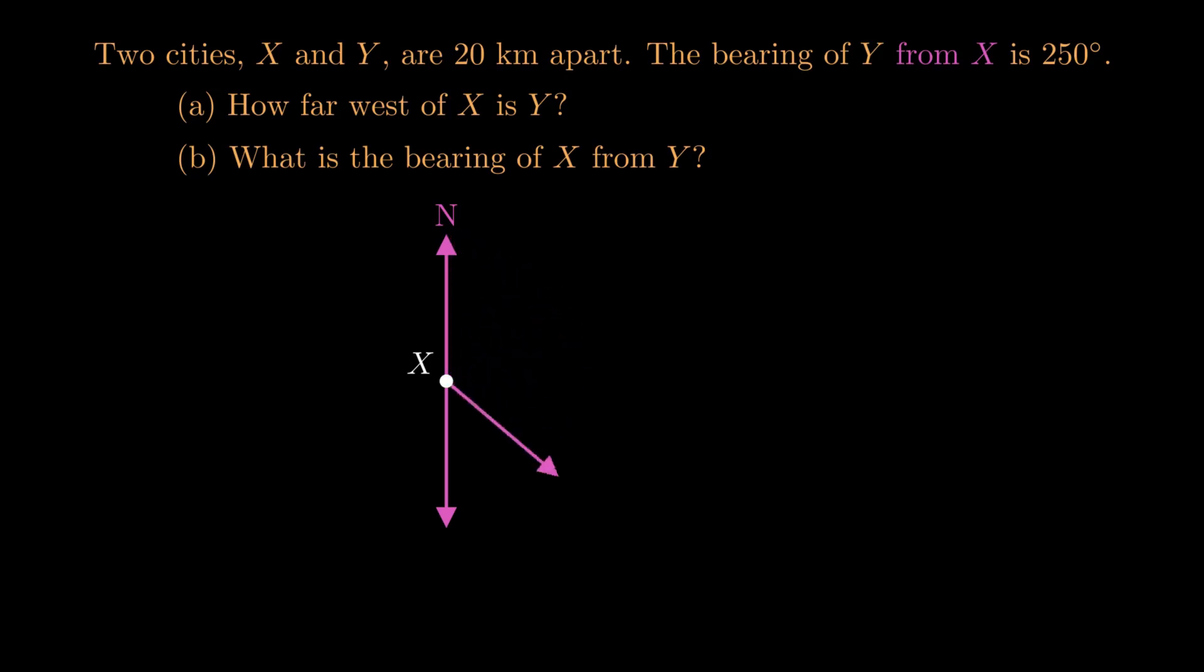Then we can think about spinning clockwise. So the bearing is 250 degrees, meaning from that north we want to spin 250 degrees. Now it's helpful to keep in mind that right angles are 90, so directly south would be 180.